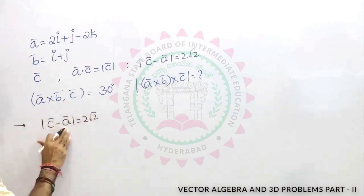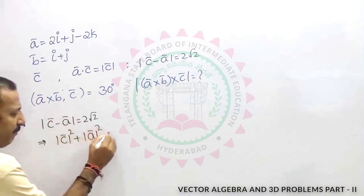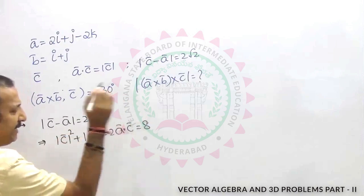mod c bar minus a bar whole square, that is mod c square plus mod a square minus 2a dot c is equal to 8.